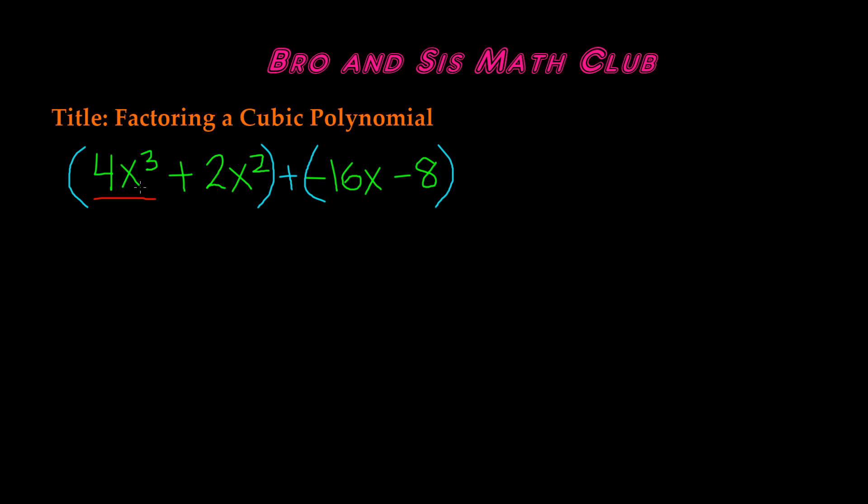Okay, so now let's go ahead and find the GCF of each set of binomials. So the GCF of 4x³ and 2x² is 2x². So now we're going to divide. 4x³ divided by 2x² gives us 2x. 2x² divided by 2x² simply gives you 1, so we have +1.